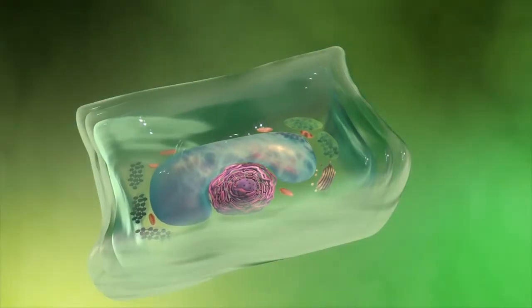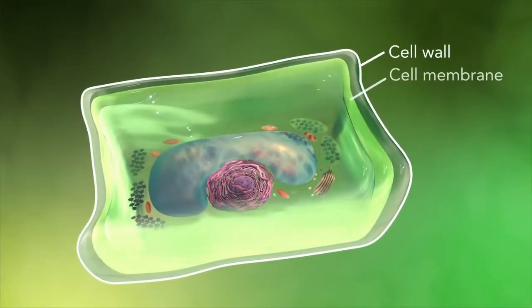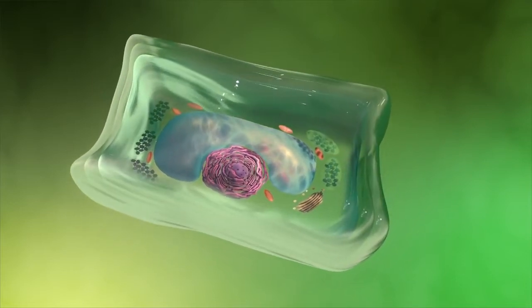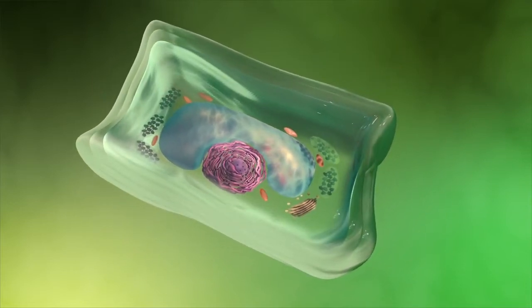Plant cells also have a cell wall outside of their cell membranes that shape, support, and protect the plant cell. Animal cells never have a cell wall.